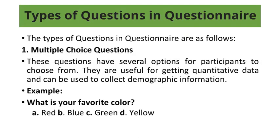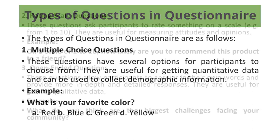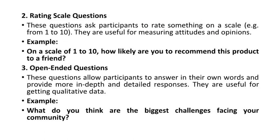Types of questions in a questionnaire: 1. Multiple-choice questions — these questions have several options for participants to choose from. They are useful for getting quantitative data and can be used to collect demographic information. Example: What is your favorite color? A. Red, B. Blue, C. Green, D. Yellow. 2. Rating scale questions — these ask participants to rate something on a scale, e.g., from 1 to 10. They are useful for measuring attitudes and opinions.